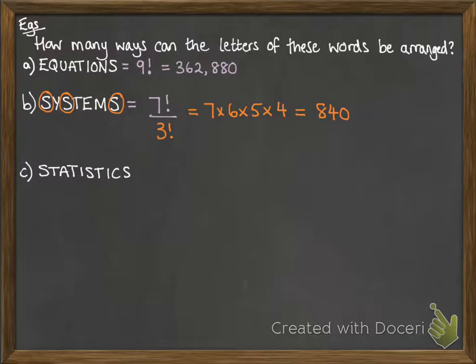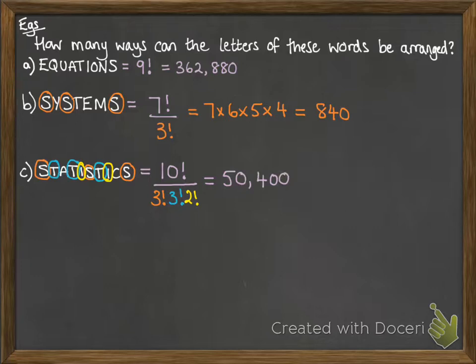Now with STATISTICS, there's a little bit more going on here. We've got 10 letters, but we have more than one of them repeating. So we've got the S repeating, we've got three of those, so we divide by three factorial. We've also got the T that repeats, so we need to divide by another three factorial. And we've got the I, that we've got two of them, so we divide by two factorial. And that you can just pop into your calculator, we get 50,400 different ways of arranging the letters in the word STATISTICS.